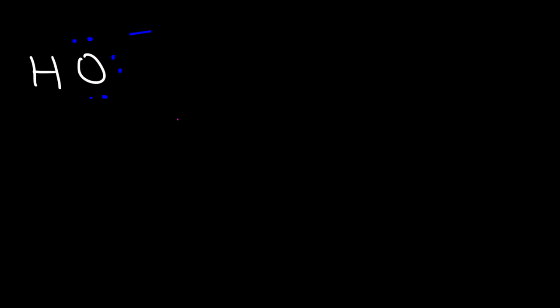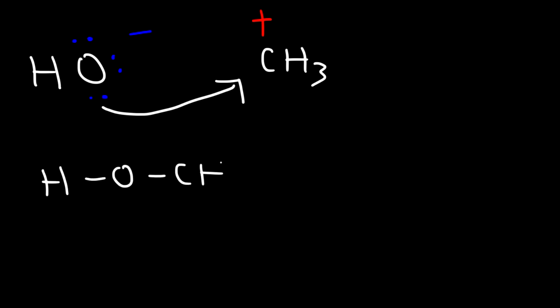Let's say if we were to put hydroxide with a methyl carbocation — we know that opposites attract. Hydroxide is going to donate a pair of its electrons to the carbon atom, and so we're going to get methanol. Now the oxygen has two lone pairs as opposed to three.